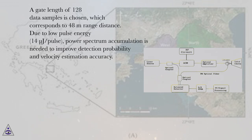A gate length of 128 data samples is chosen, which corresponds to 48 meters range distance. Due to low pulse energy, 14 μJ/pulse, power spectrum accumulation is needed to improve detection probability and velocity estimation accuracy.